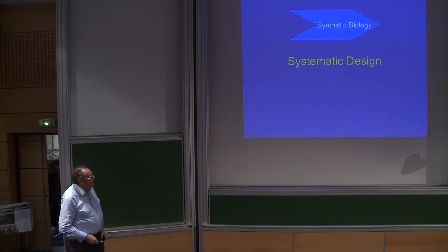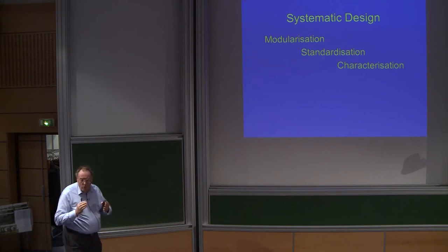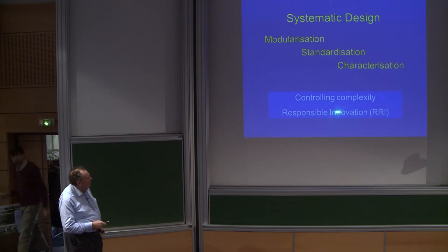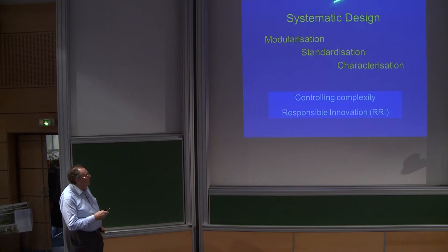If we now think about synthetic biology, when we think about it at Imperial, we think about systematic design. We see this very much as the basis of engineering biology. From our point of view, synthetic biology is about the engineering of biology. Systematic design can be broken down into these major principles: components, modularization, standardization, and characterization linked to being able to control the complexity of the biology according to human design. That's the aim of systematic design, but also a big trend within the UK and other parts of the European community is the whole issue about responsible research innovation.